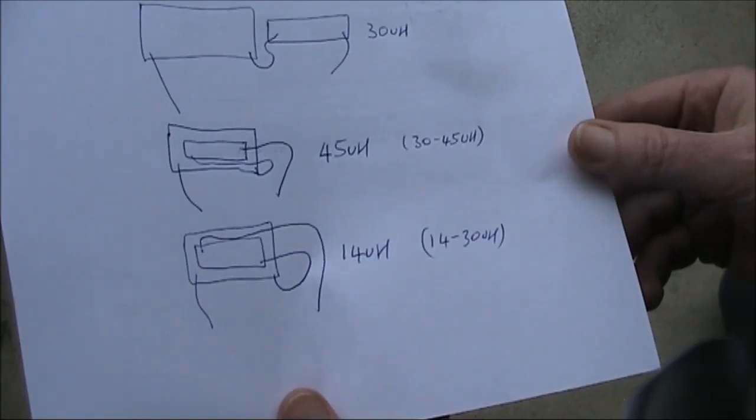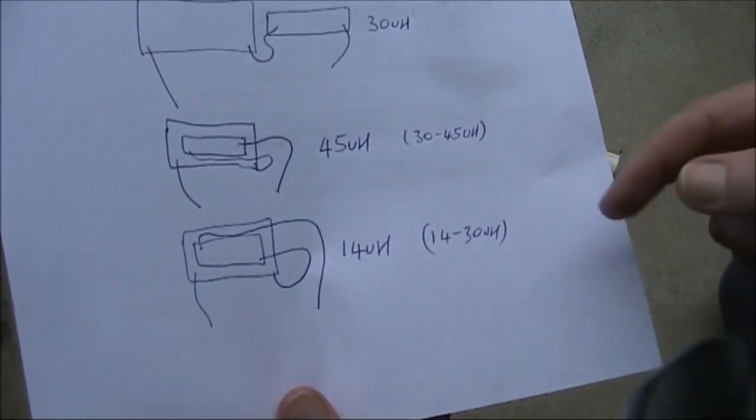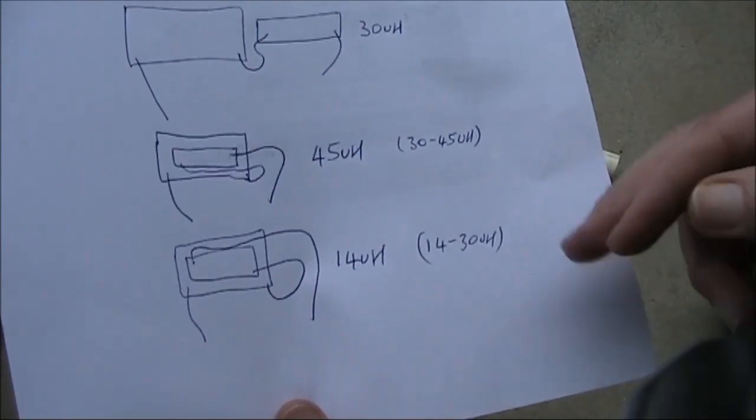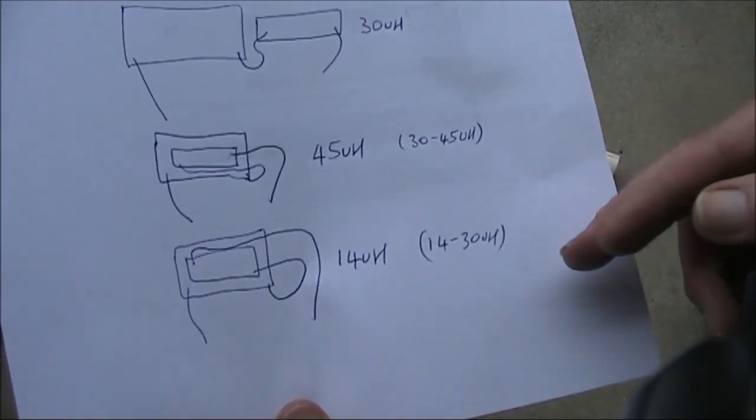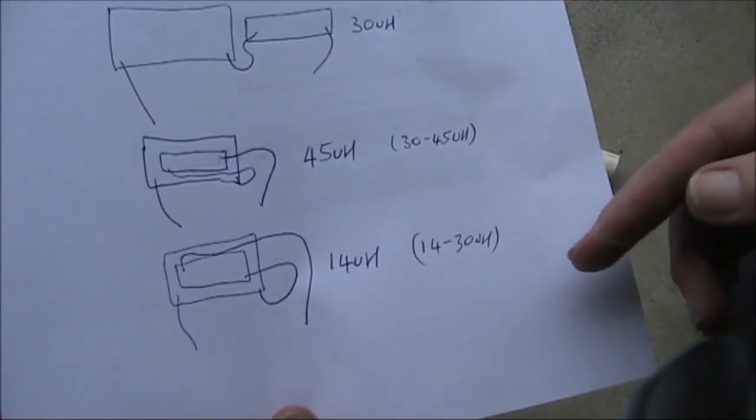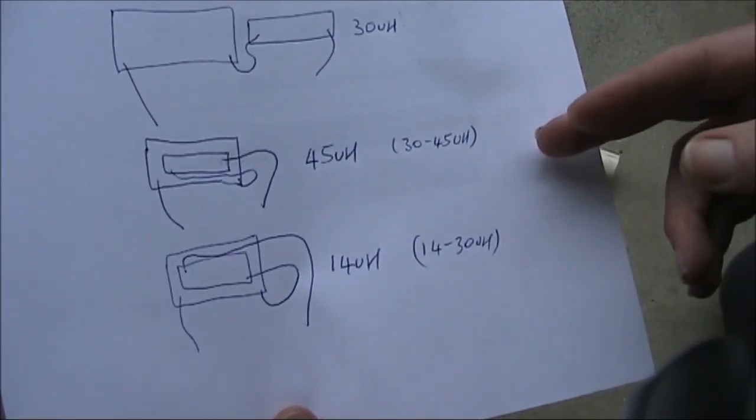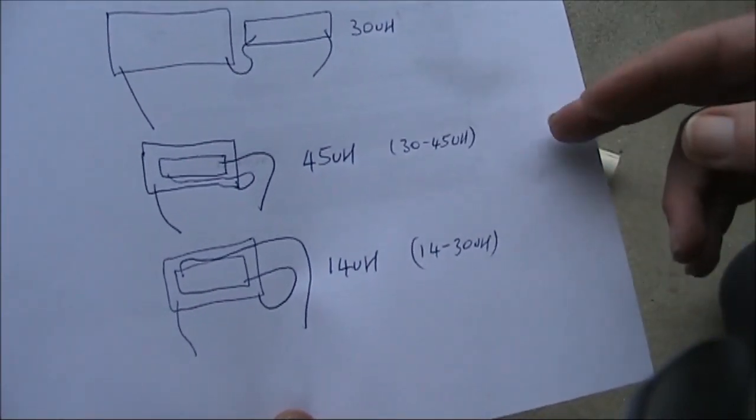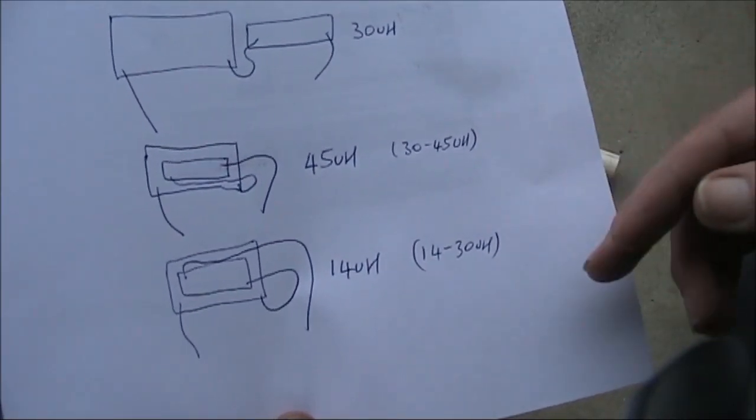At one time it was popular to build crystal sets in matchboxes, and one of the ways of doing it was to have a larger coil sliding over a smaller coil on the inner tray to vary the inductance, with you flipping the outer relative to the inner to change the frequency range to another part of the medium wave band.